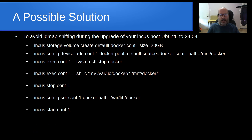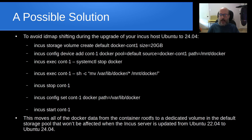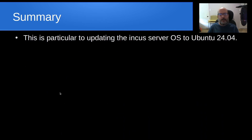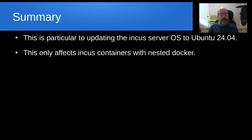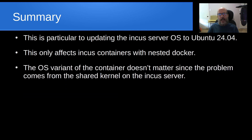Then I'm going to start the container back up. This moves all of the Docker data from the container root file system to a dedicated volume in the default storage pool, and that won't be affected when the Incas container is updated from Ubuntu 22.04 to Ubuntu 24.04. In summary, this is particular to updating the Incas server operating system from 22.04 to 23.10 or from 23.10 to Ubuntu 24.04, and this only affects Incas containers that have nested Docker applications. The OS variant of the container doesn't matter since the problem comes from the shared kernel on the Incas server.